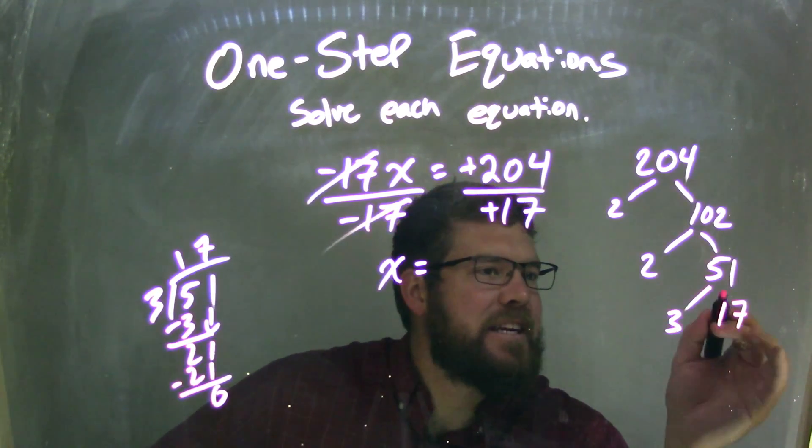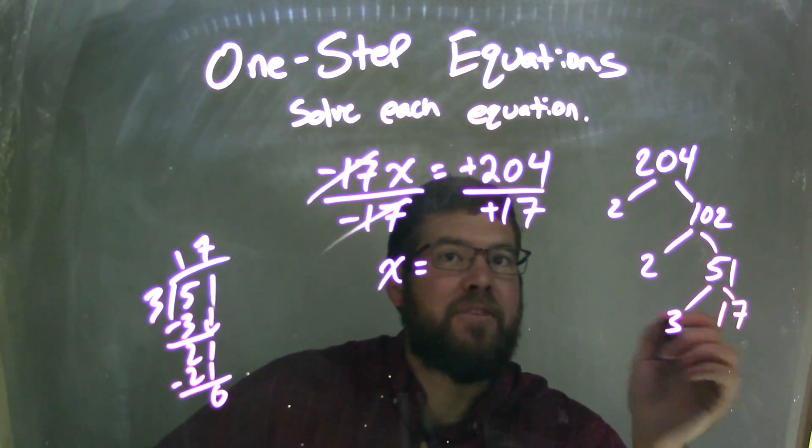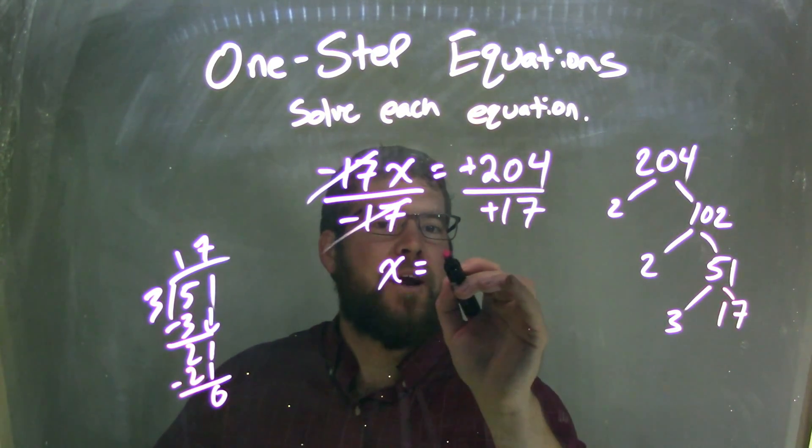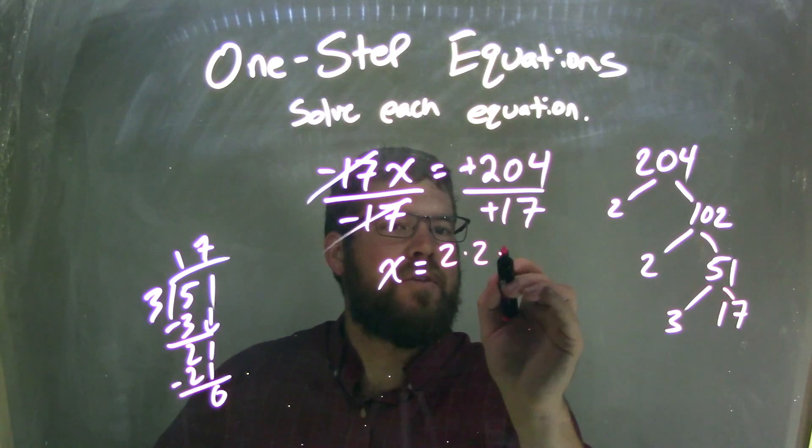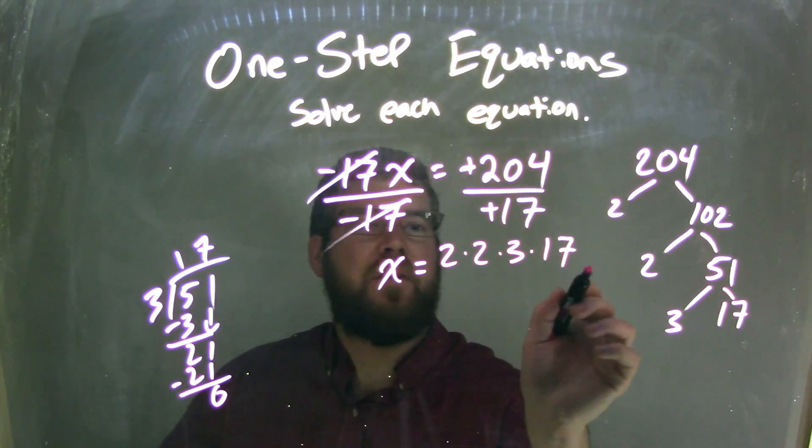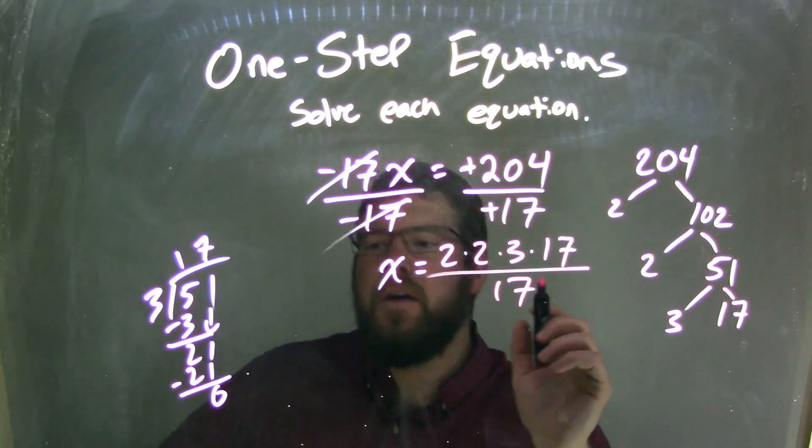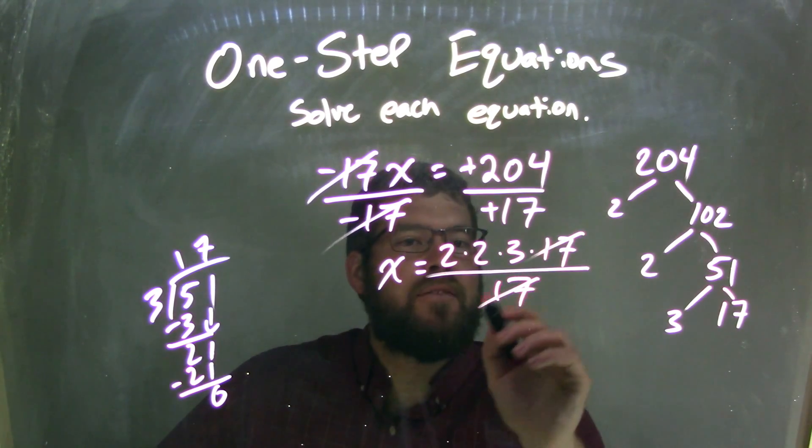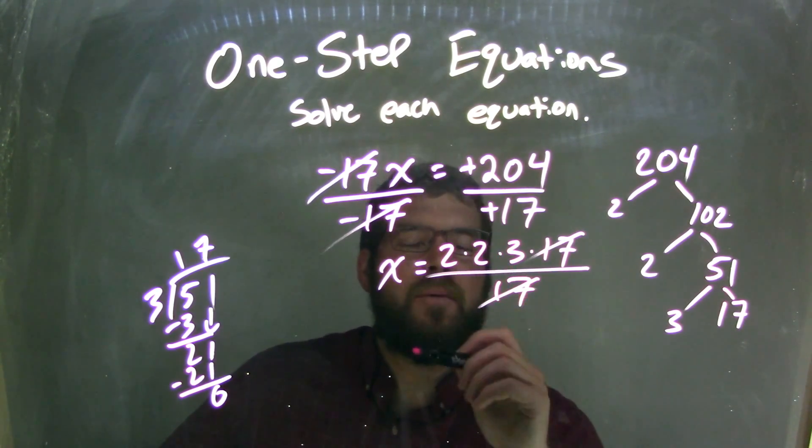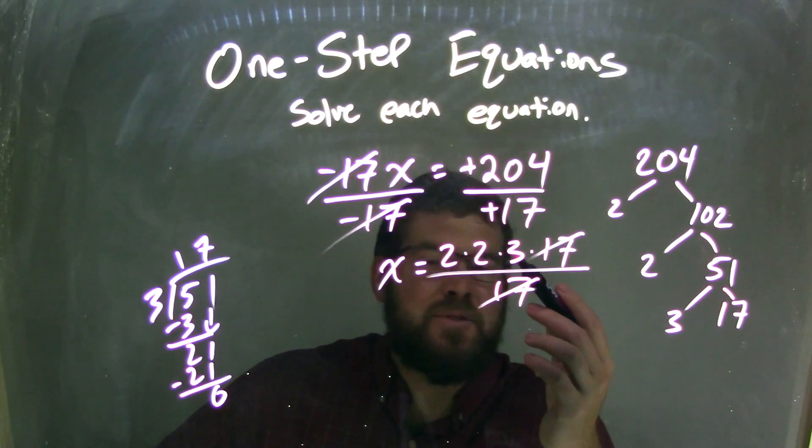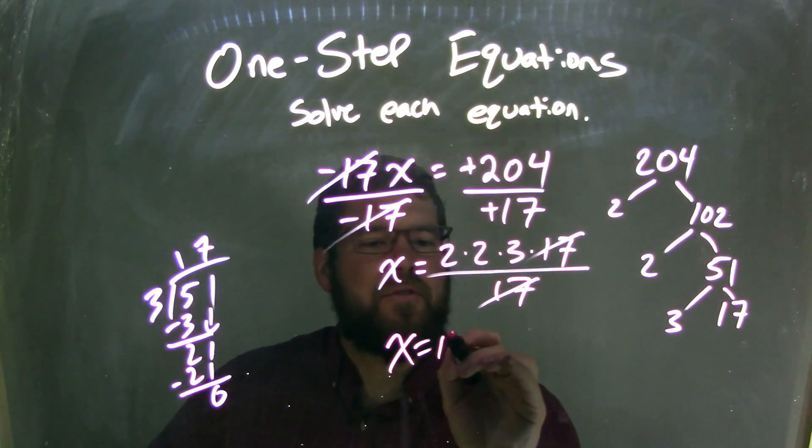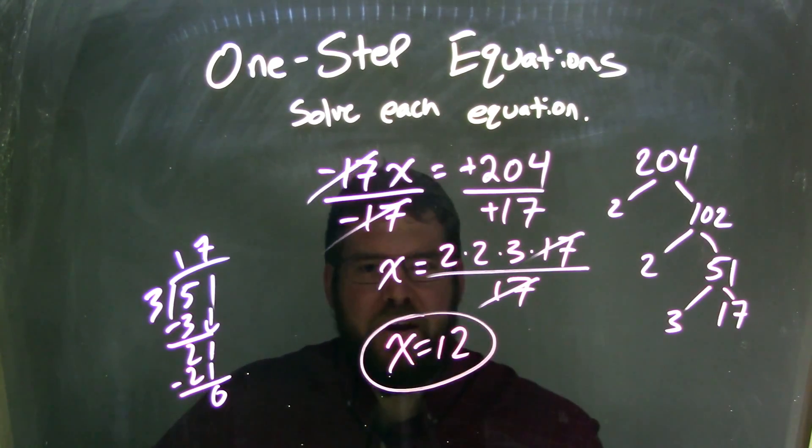So 3 and 17 here at the end. So now if I multiply it out, 204, I can rewrite it to be 2 times 2 times 3 times 17, all over 17. This makes it easy, the 17 will cancel. So now we're left with 2 times 2 times 3. 2 times 2 is 4, times 3 is 12, and so x equals 12 is our final answer.